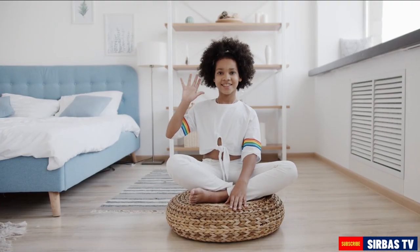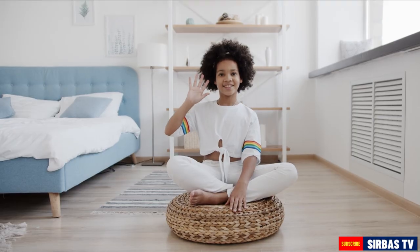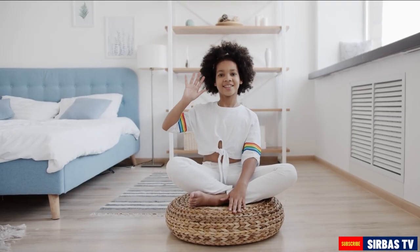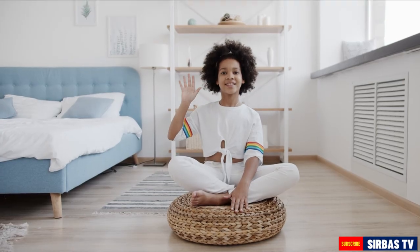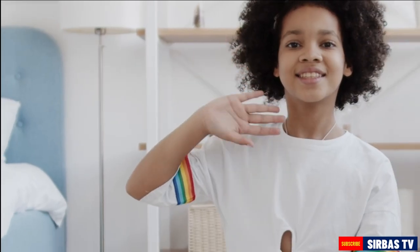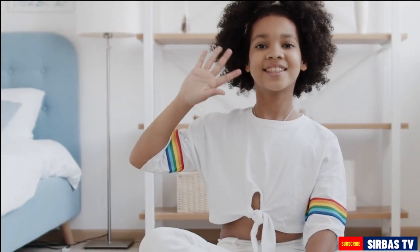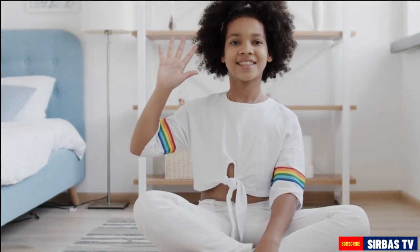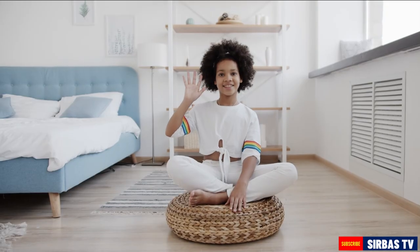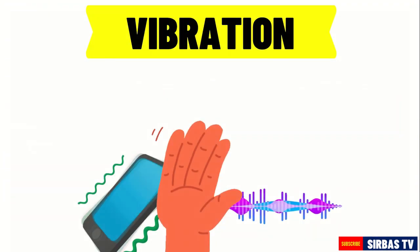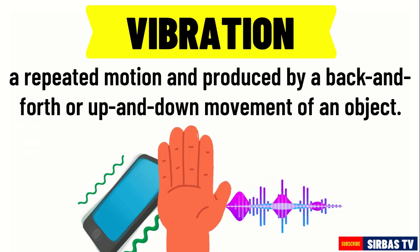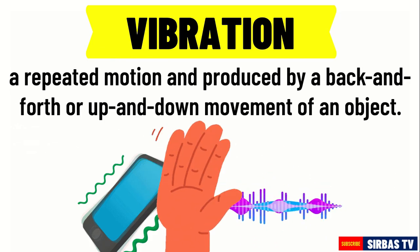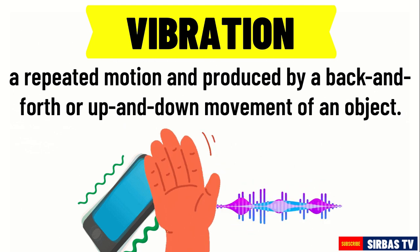Observe this girl. What is she doing? She is waving her hand. Now observe her palm. What is she doing to make a wave? She is repeatedly moving her hand side to side. In science, we call this vibration. A vibration is a repeated motion produced by a back and forth or up and down movement of an object.